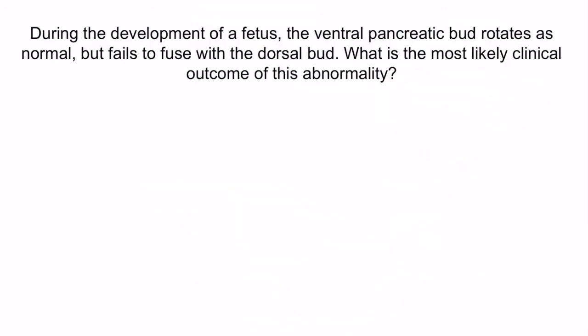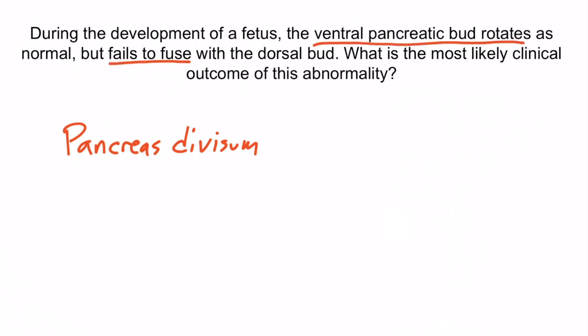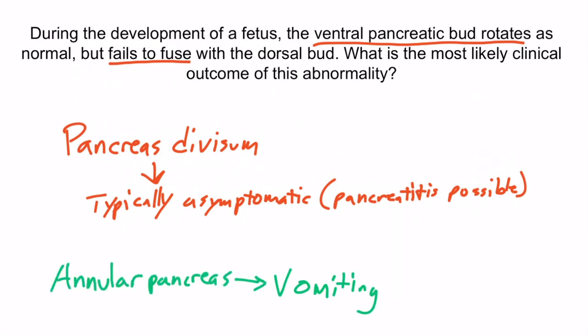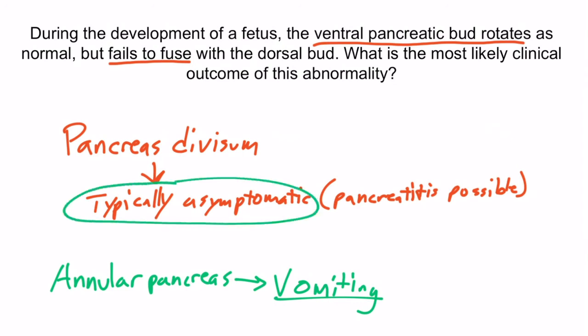Now let's do a question to apply what you've learned. During the development of a fetus, the ventral pancreatic bud rotates as normal but fails to fuse with the dorsal bud — what is the most likely clinical outcome? What's being described here is pancreas divisum, because there's normal rotation but failure of fusion. Recall that pancreas divisum is typically asymptomatic, but it may cause pancreatitis. If you were thinking about vomiting, that would be consistent with annular pancreas, which occurs when there's failure of the ventral bud to rotate around the duodenum, forming a ring that leads to obstruction and vomiting. But this fetus has pancreas divisum, so the most likely clinical outcome is actually no symptoms at all. That concludes this section.